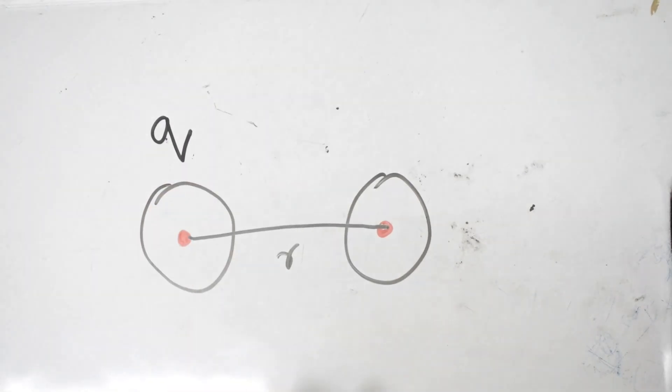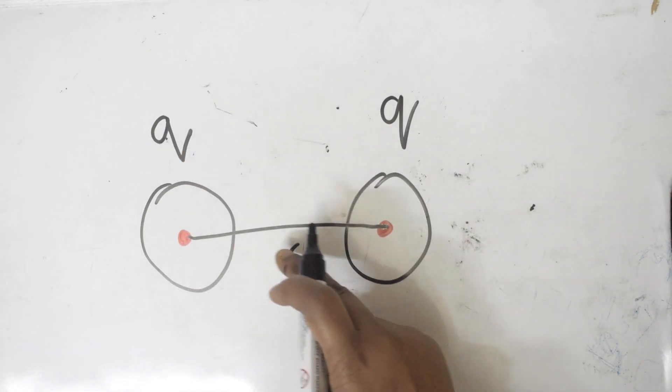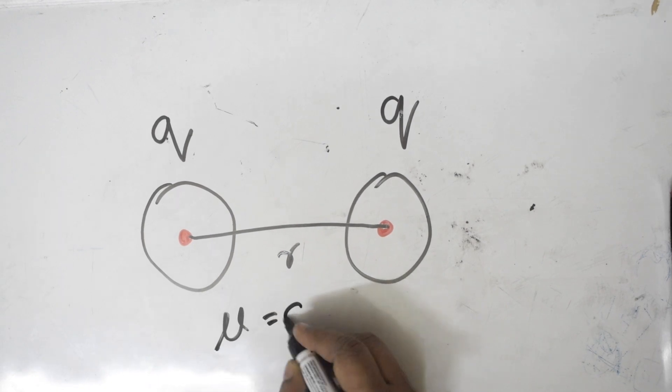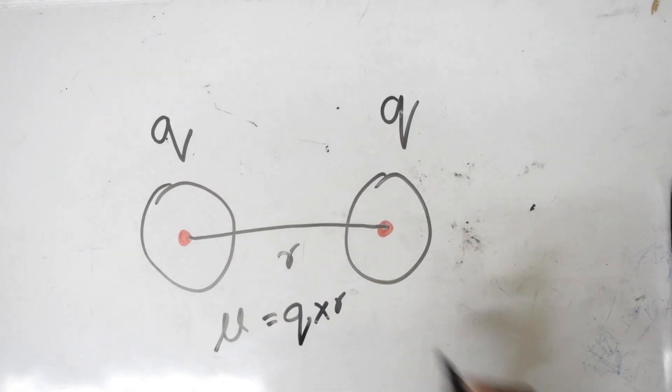I am going to represent that internuclear distance by r. This atom has certain charge q, this atom has certain charge q. So what is dipole moment? Dipole moment is nothing but the multiplication factor of both. mu is equal to q into r.